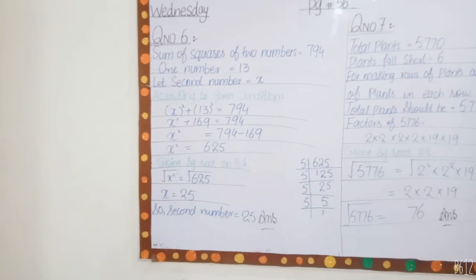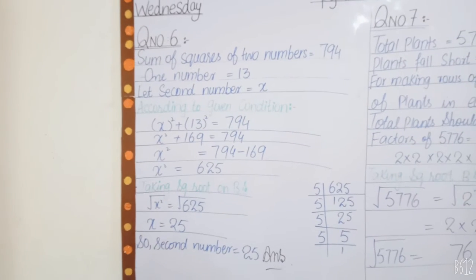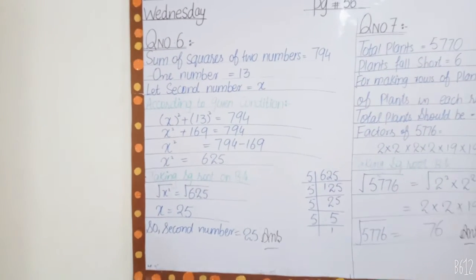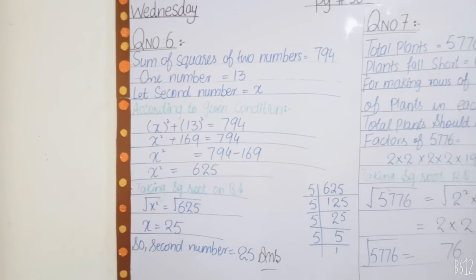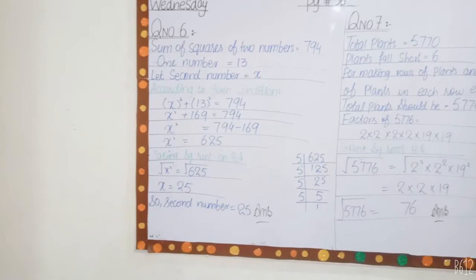x² + 169 = 794. x² will be on one side. We have to move 169 to the other side. x² = 794 - 169.